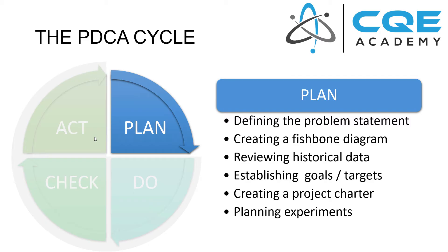In the planning phase is where we do things like define the problem statement. Before we can solve a problem, it's good to get crystal clear on what the problem statement is — whether it's customer complaints, a yield issue, process capability, or process stability. It's good to align with your team and say, this is the problem we're trying to solve. Your problem statement might change as you spin the cycle, but it's good to start there. Then maybe the next step is to do a fishbone diagram to identify potential root causes and contributing factors that you want to test to either rule out or confirm.